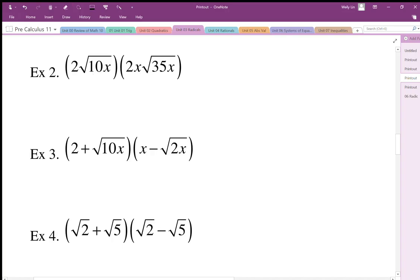So I'm just going to do the number parts with the number parts. So this is going to multiply this, and the radical parts are going to multiply the radical parts. So I end up with 2 times 2x is 4x square root, 10x times 35x is 350x squared.